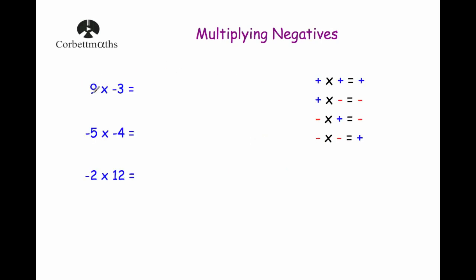Let's have a look at some questions. Our first question: 9 multiplied by negative 3. We've got a positive times a negative, and a positive times a negative is always equal to a negative. So we write down negative first, then do 9 times 3, which is 27. Our answer is negative 27.